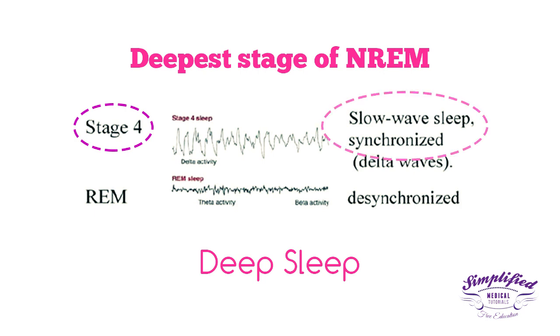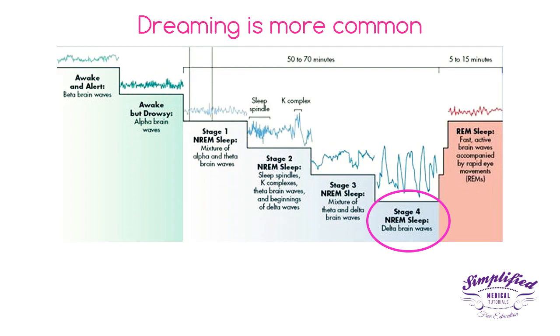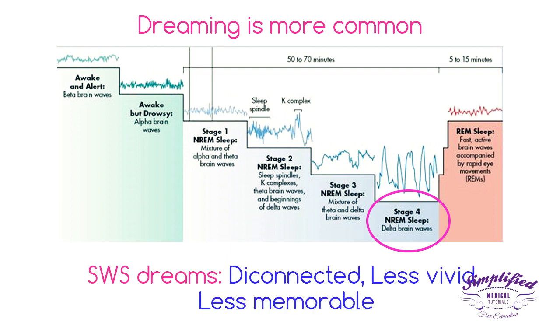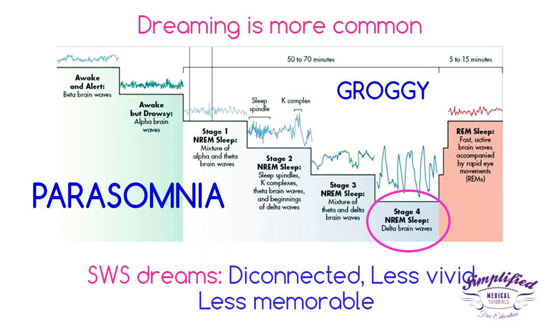Dreaming is more common in this stage than other stages of NREM sleep. The content of slow wave sleep dreams tends to be disconnected, less vivid, and less memorable than those that occur during REM sleep. Parasomnias most commonly occur in this stage. A person will typically feel groggy when awoken from this stage and mental performance is somewhat impaired.